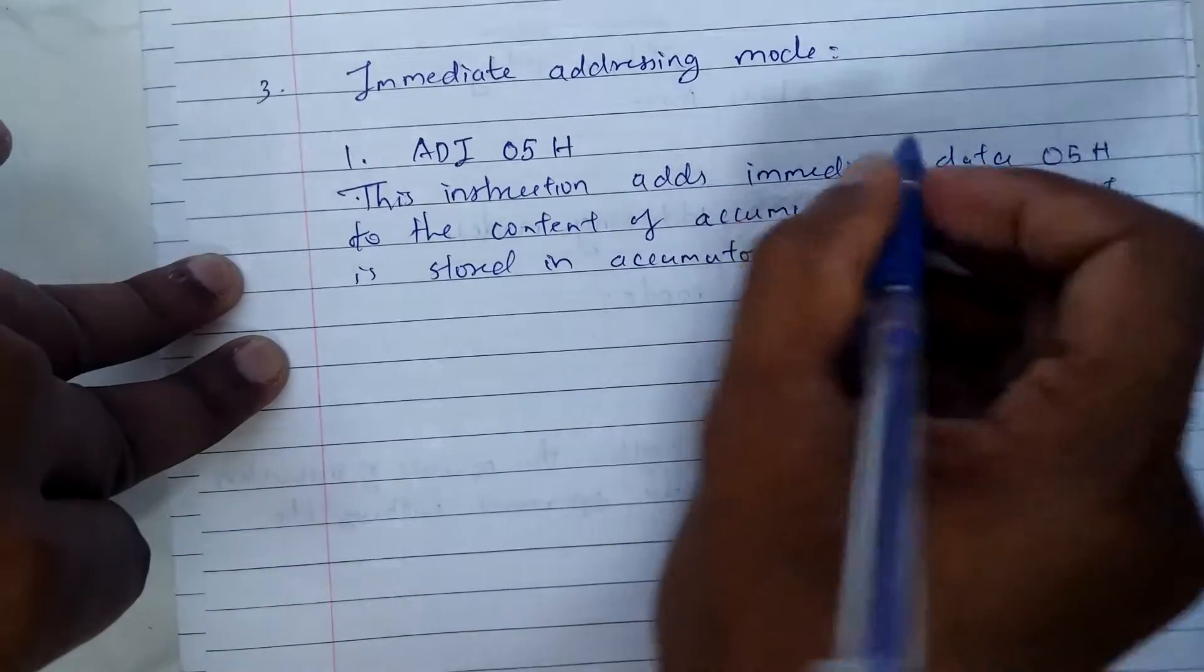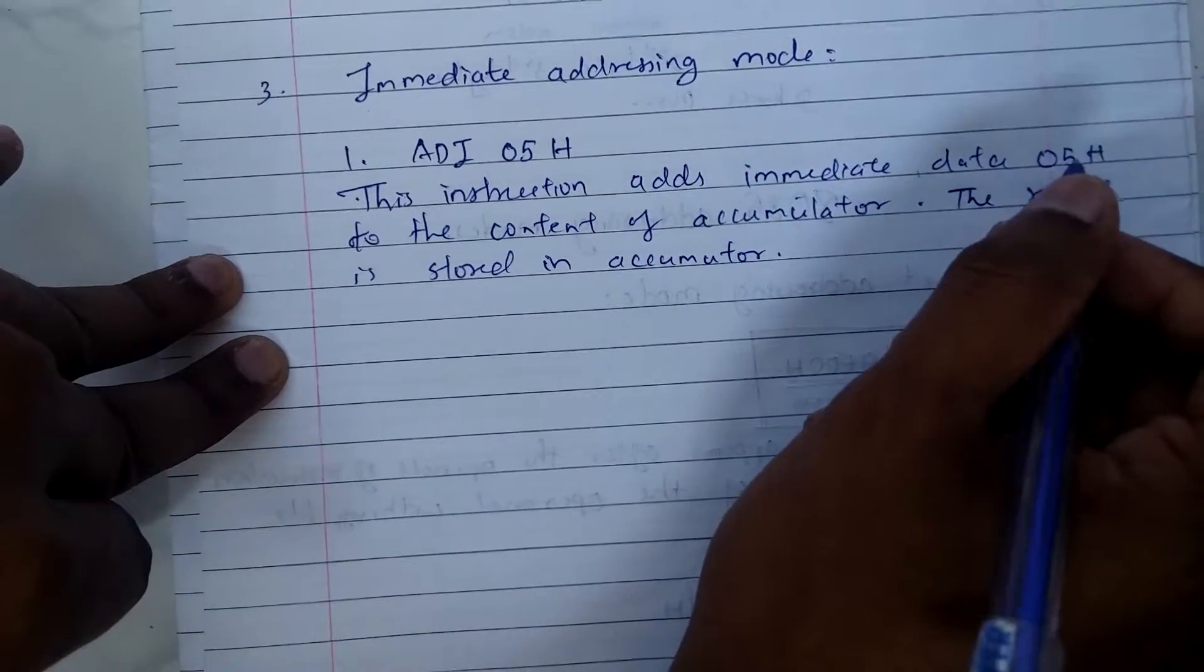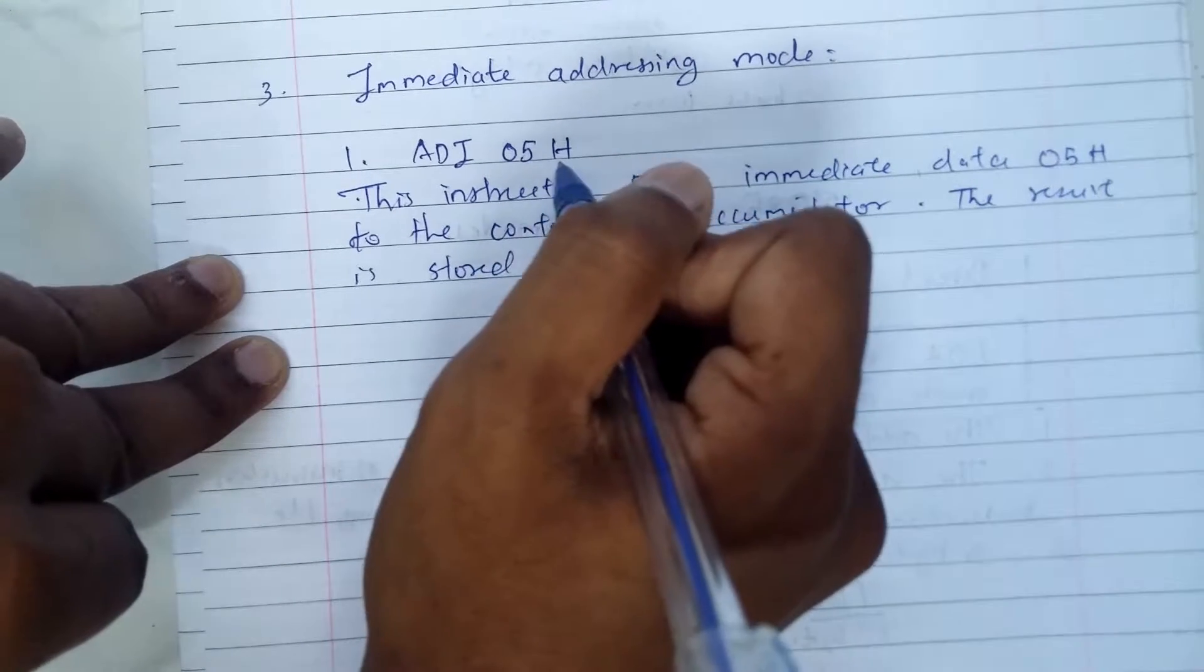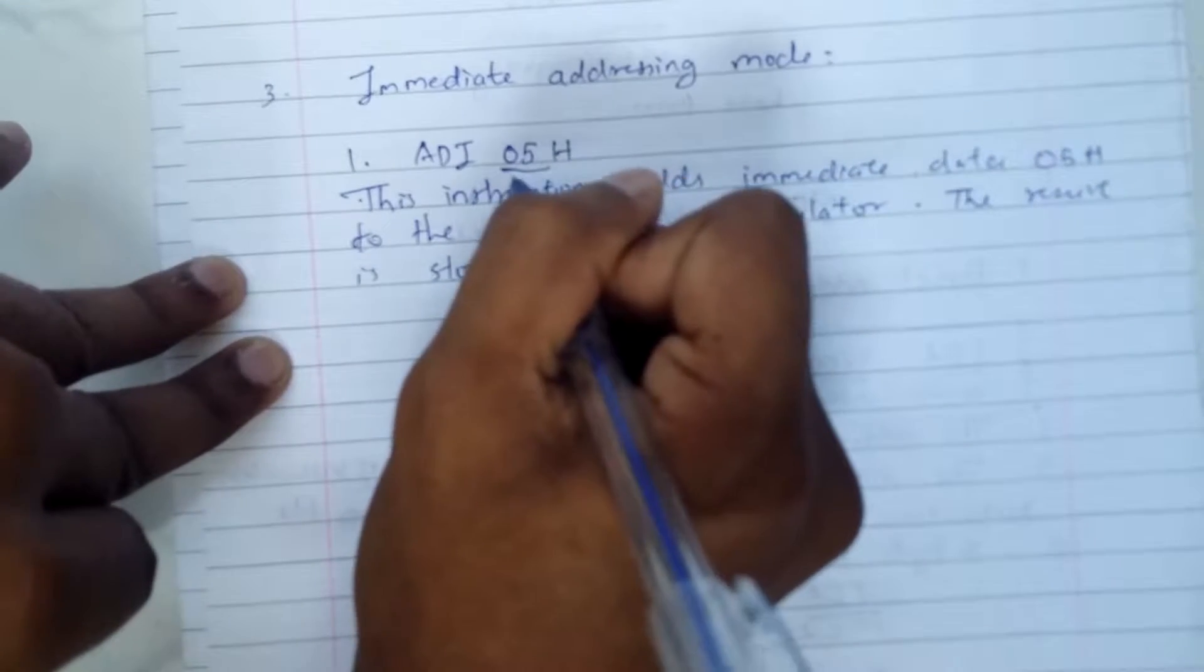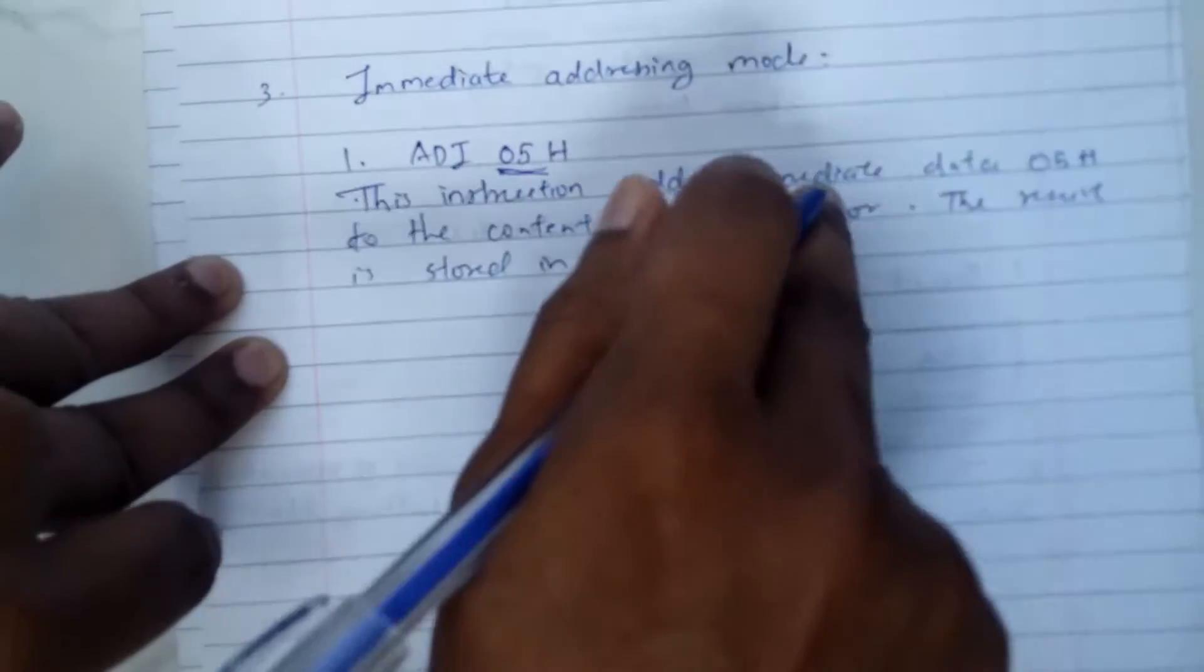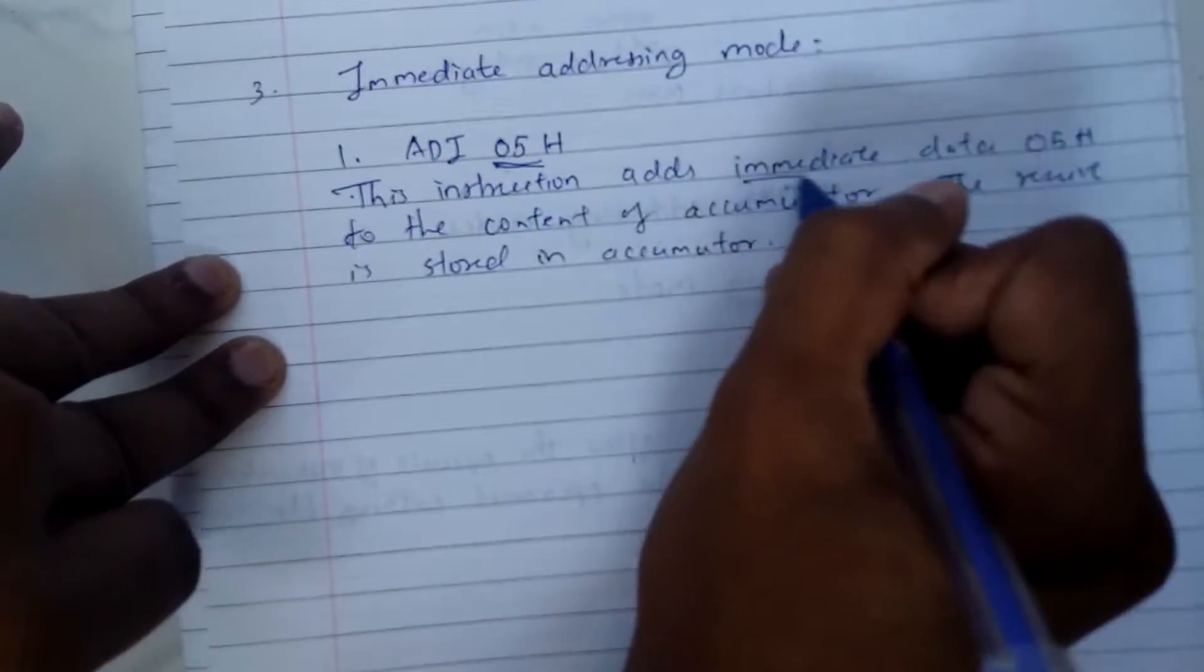Now what do we mean by immediate data 05H? That means we don't have an address or a register here. We have directly a number, we have directly a data here to be added. That's the meaning of immediate data.